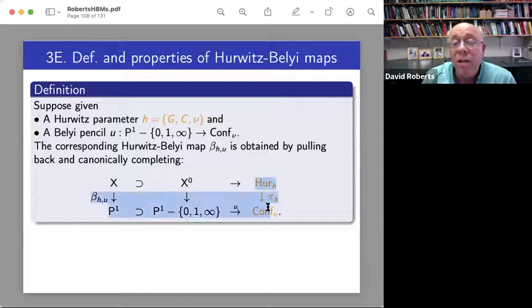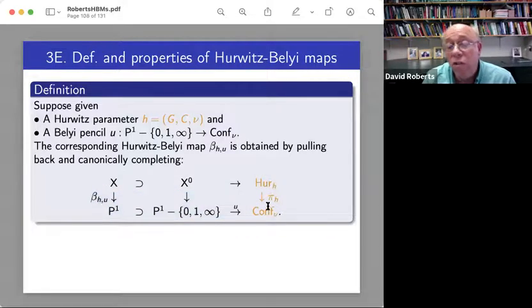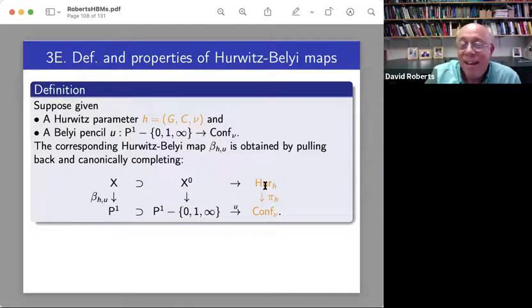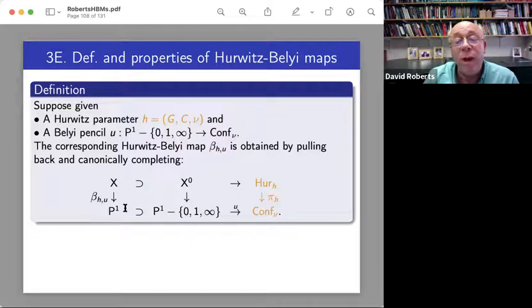So then we can look at this pretty standard diagram. So we have this miraculous Hurwitz cover. We have a one parameter slice of the huge base. And so we just pull back. So now this is a cover of one dimensional things.